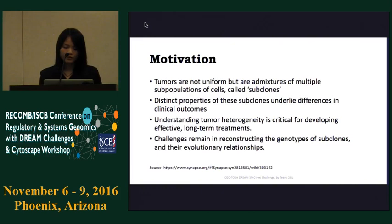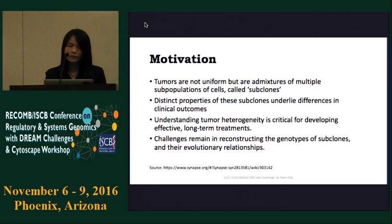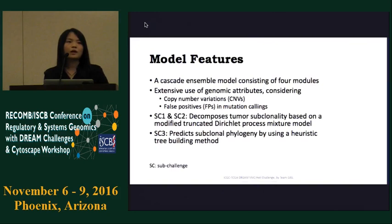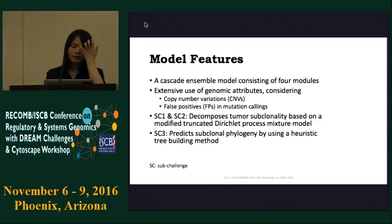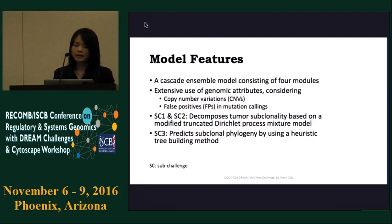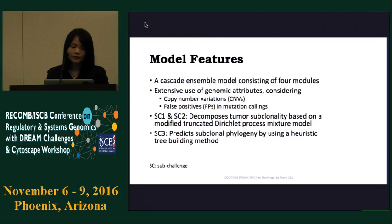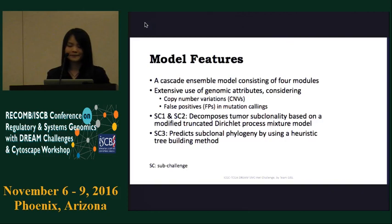The goal of the SMC heterogeneity challenge is to identify the best algorithms that can reconstruct the genotypes of subclones and their evolutionary relationships. To solve the challenge questions, our team developed a cascade ensemble model. This model consists of four connected modules and features an extensive use of genomic attributes that enables us to account for the negative effects on subclonal reconstruction caused by copy number variations as well as false positive mutation callings. For the first two subchallenges, we employed a modified truncated Dirichlet process mixture model to decompose the tumor subclonality. And for the third subchallenge, we developed a heuristic tree building method to predict the subclonal phylogeny.